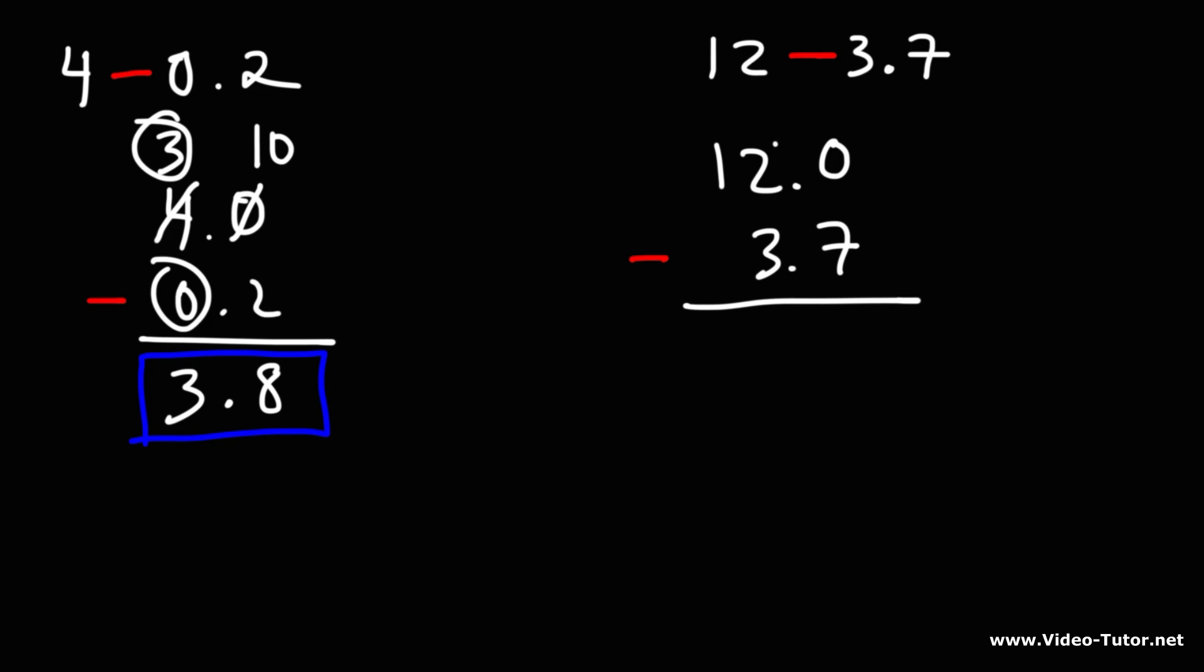We want to borrow a 1 from the 2. The 2 will become a 1. The 0 will become a 10. 10 minus 7 is 3. Now we can't really do 1 minus 3, so we need to borrow a 1 from here. That turns into a 0. This becomes 11. 11 minus 3 is 8. And so we have 8.3 as the answer.